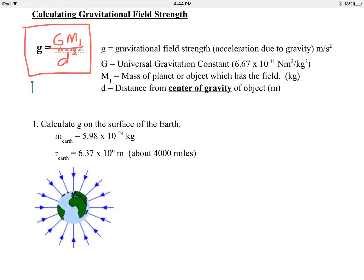Little g stands for the gravitational field strength — it's a fancy way of talking about the acceleration due to gravity for a particular planet. We've used this all year: on the surface of the earth, little g is 9.8 meters per second squared. Calling it the gravitational field strength is a more generic way of talking about this concept. Capital G is 6.67 times 10 to the negative 11th Newton·meter squared per kilogram squared — that will always be given on any test. M₁ is the mass of the planet in kilograms, and d is the distance from the center of gravity of object one to the center of gravity of object two.